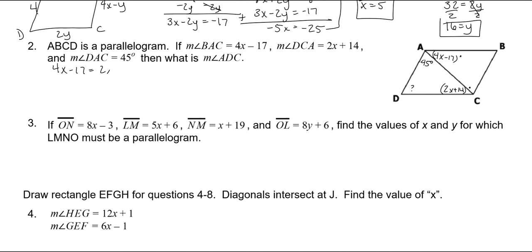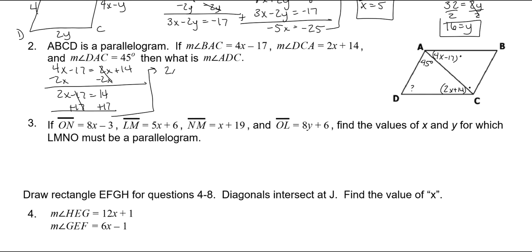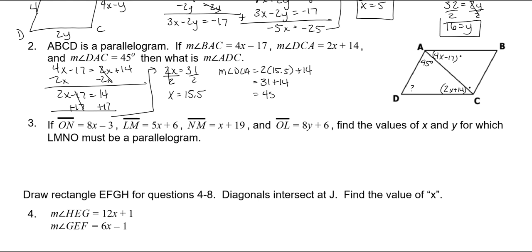This is a parallelogram, so these are parallel lines cut by a transversal—those are alternate interior angles, so they are congruent. 4X minus 17 is equal to 2X plus 14. Subtract 2X on both sides: 2X minus 17 is equal to 14. Add 17 to both sides: 2X is equal to 31. Divide both sides by 2, and X is 15.5. Plugging back in to find DCA: 2 times 15.5 plus 14 is 31 plus 14, which is 45 degrees.